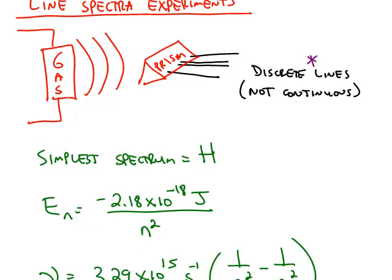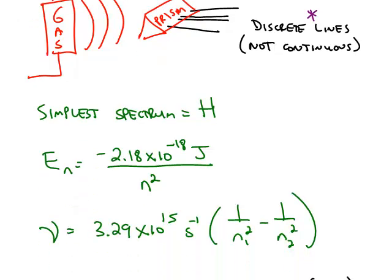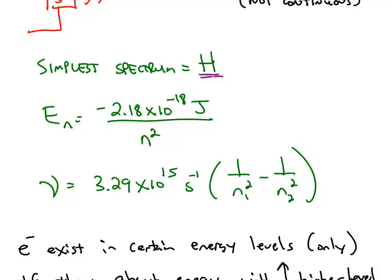Each gas gives a unique spectrum, and the simplest spectrum is for the hydrogen atom. Before this was well understood, people were able to come up with formulas that were able to replicate the lines that we're seeing for the hydrogen atom. One of those formulas is given here.